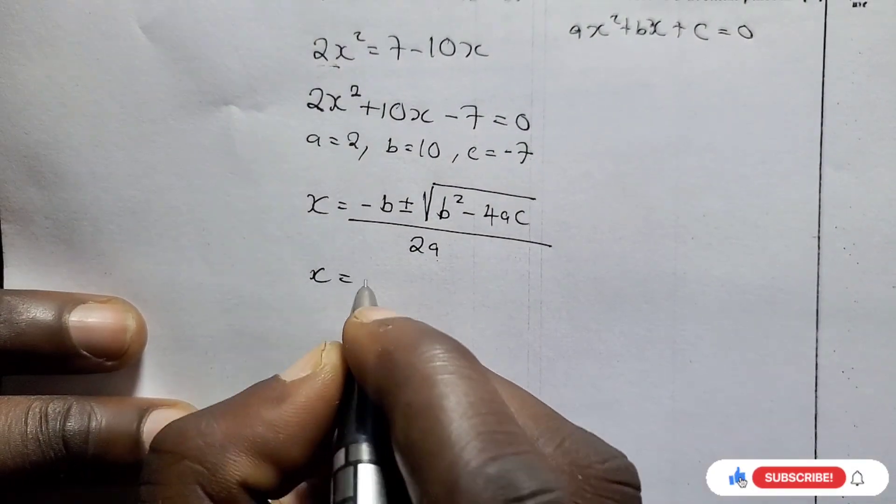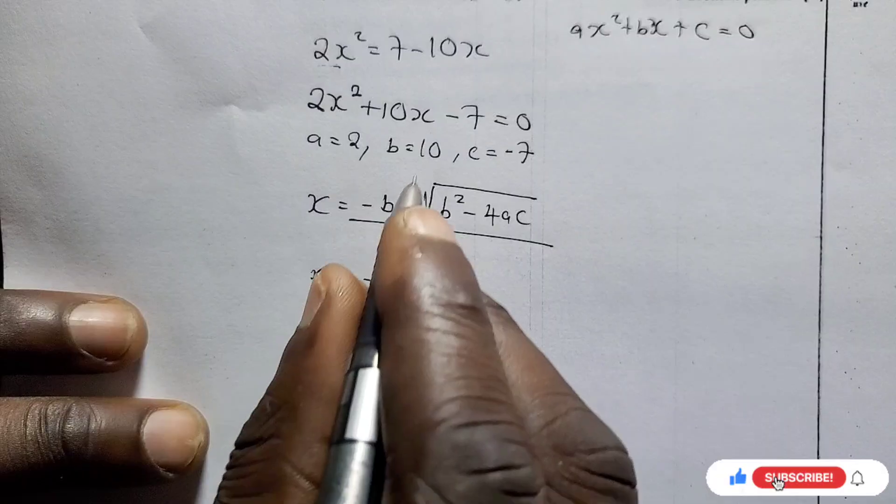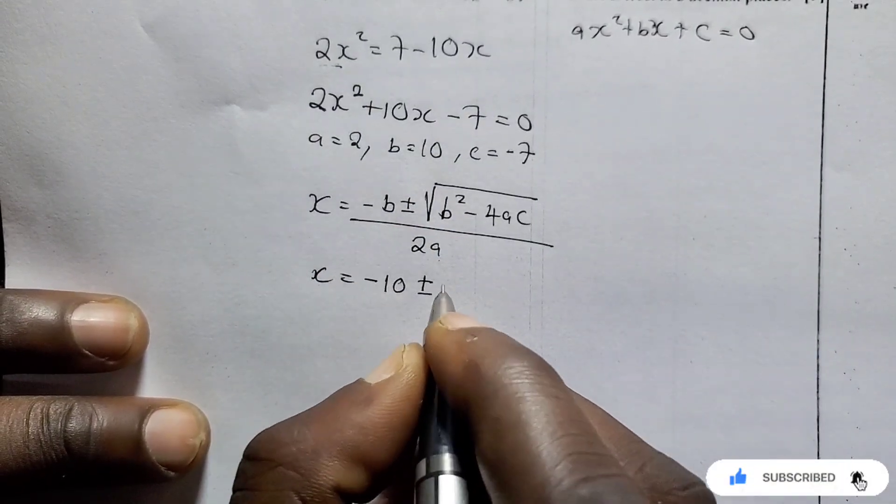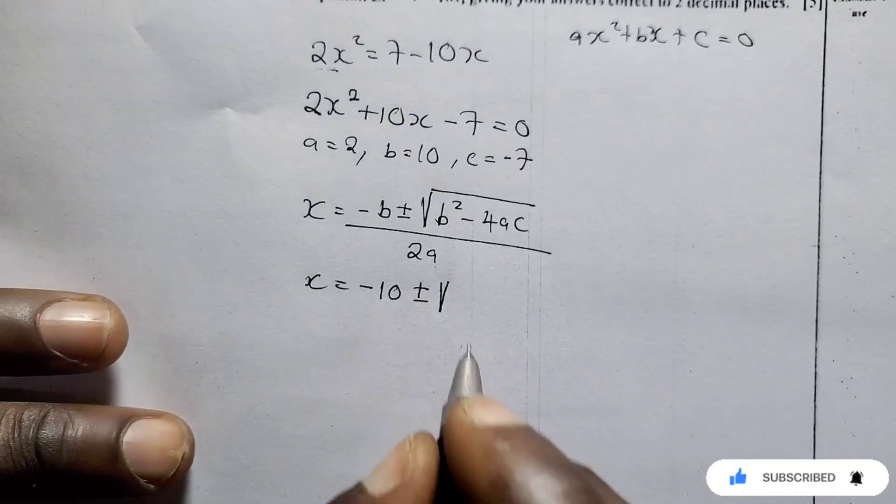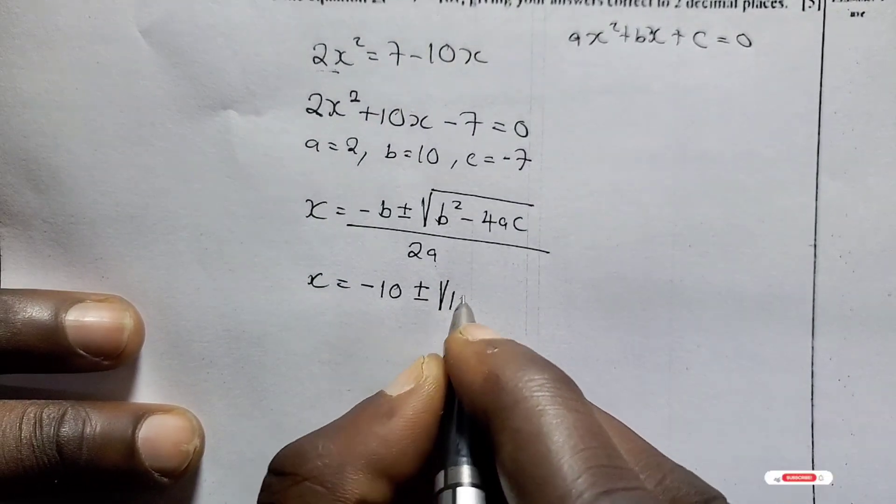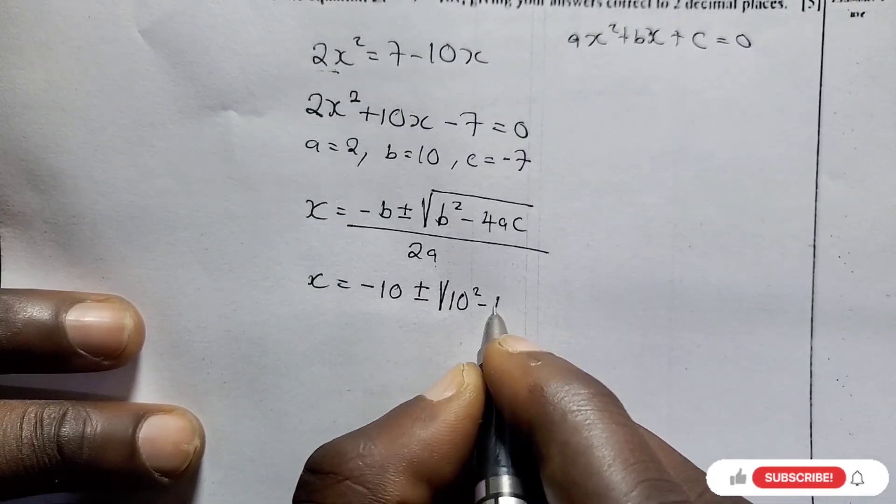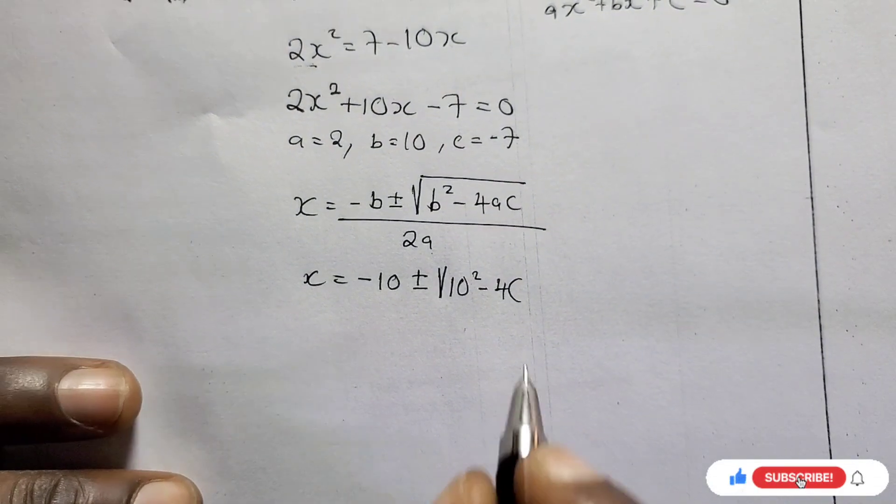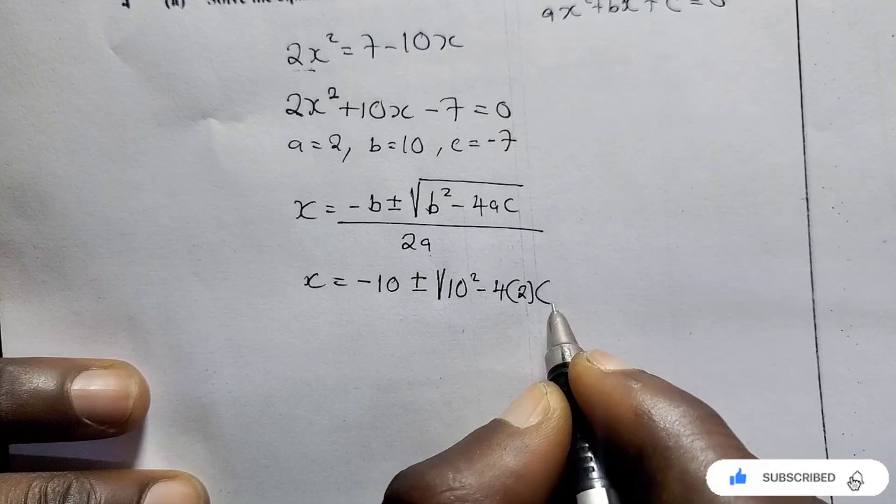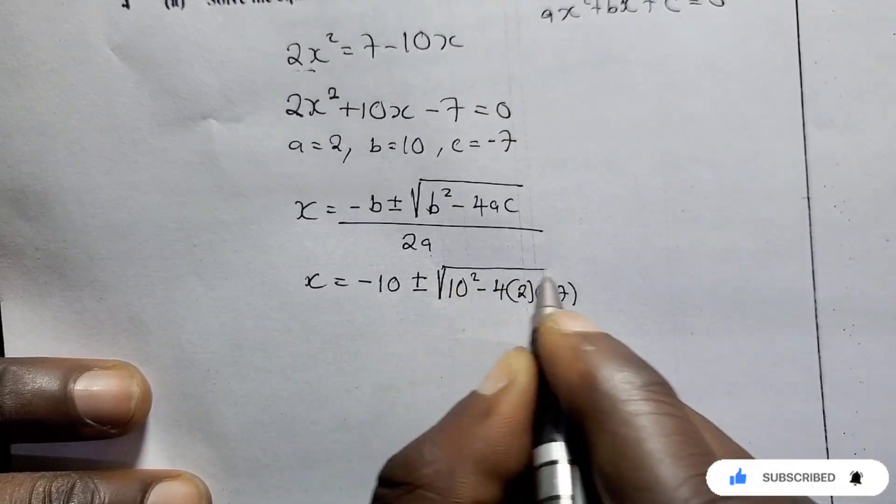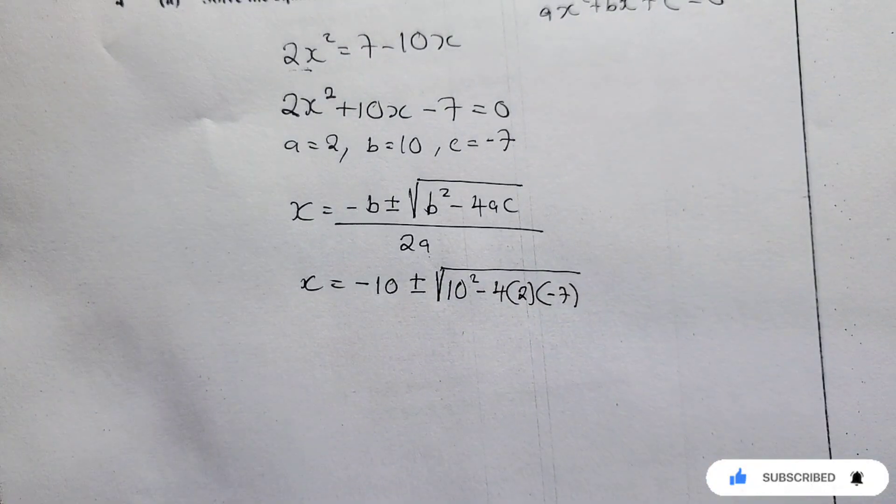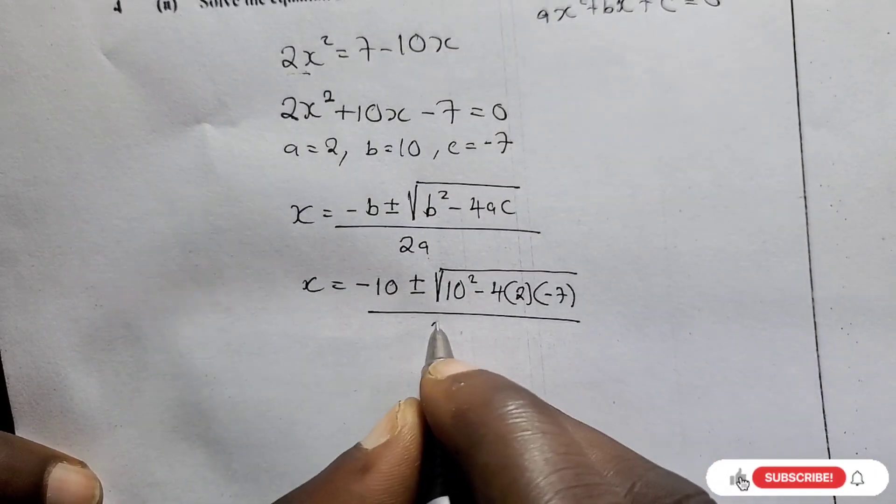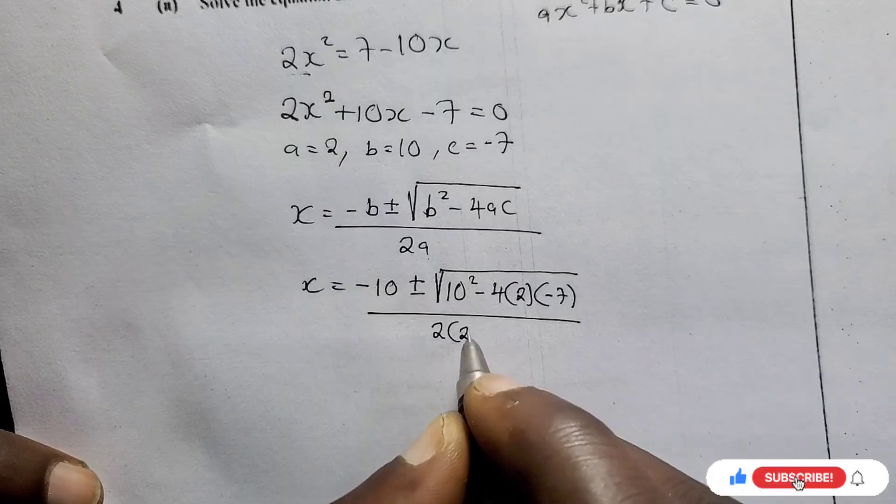Then let's substitute. X equals negative, what is our B? Our B is 10. So it would be negative 10 plus minus the square root. B is 10, so it would be 10 squared minus 4. What is our A? Our A is 2. Our C is negative 7. This is what we are having. You should be writing nicely. You write nicely over 2 times A, which is 2.